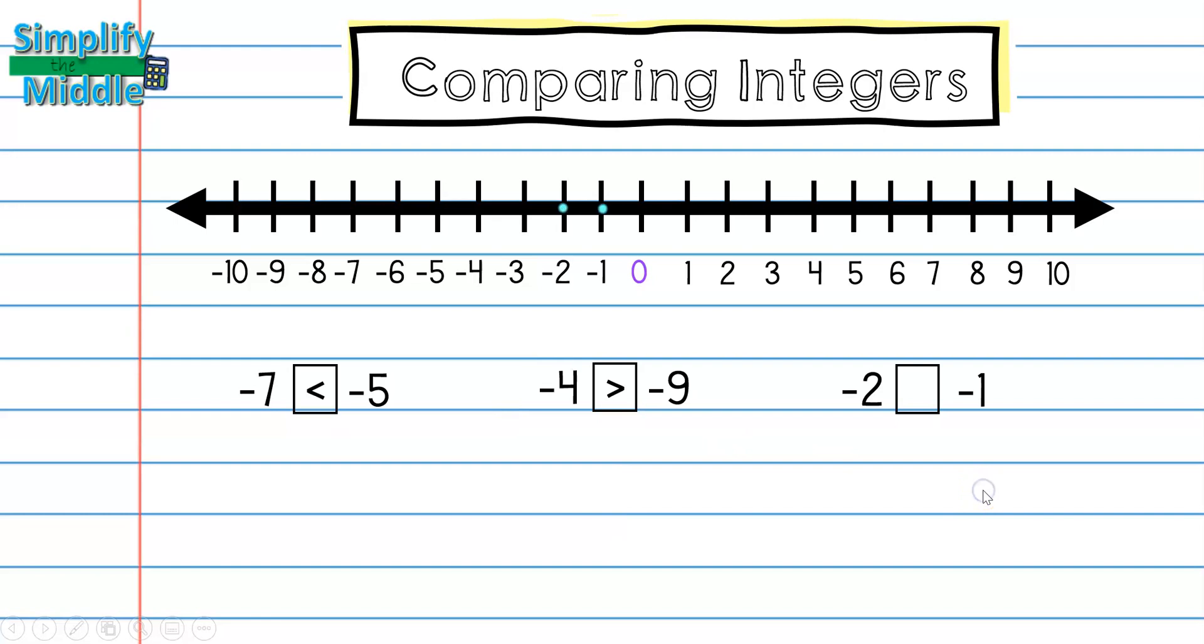My final two numbers, negative 2 and negative 1, I'm comparing by looking at negative 2. And if you notice, we've compared by looking at the first number in the set. Because that's how our comparison symbol will face. So our negative 2 is to the left of negative 1. Which means it's less than.